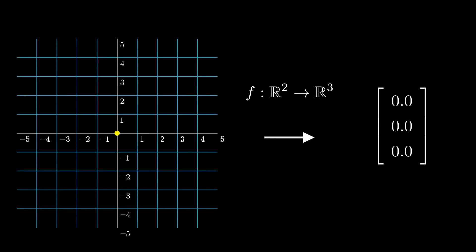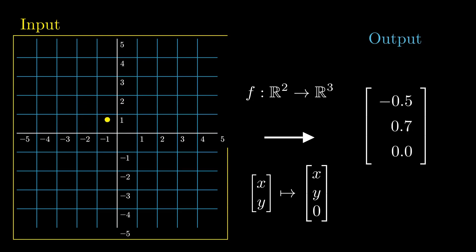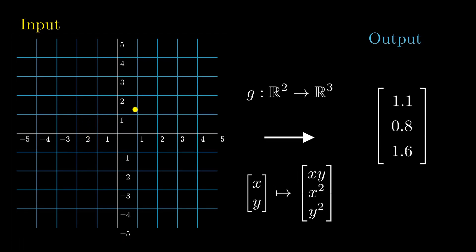Well, a function from 2D to 3D takes two numbers as input and outputs a point in 3D space. We can model our input as a point in 2D space and then write what its 3D output is on the right.